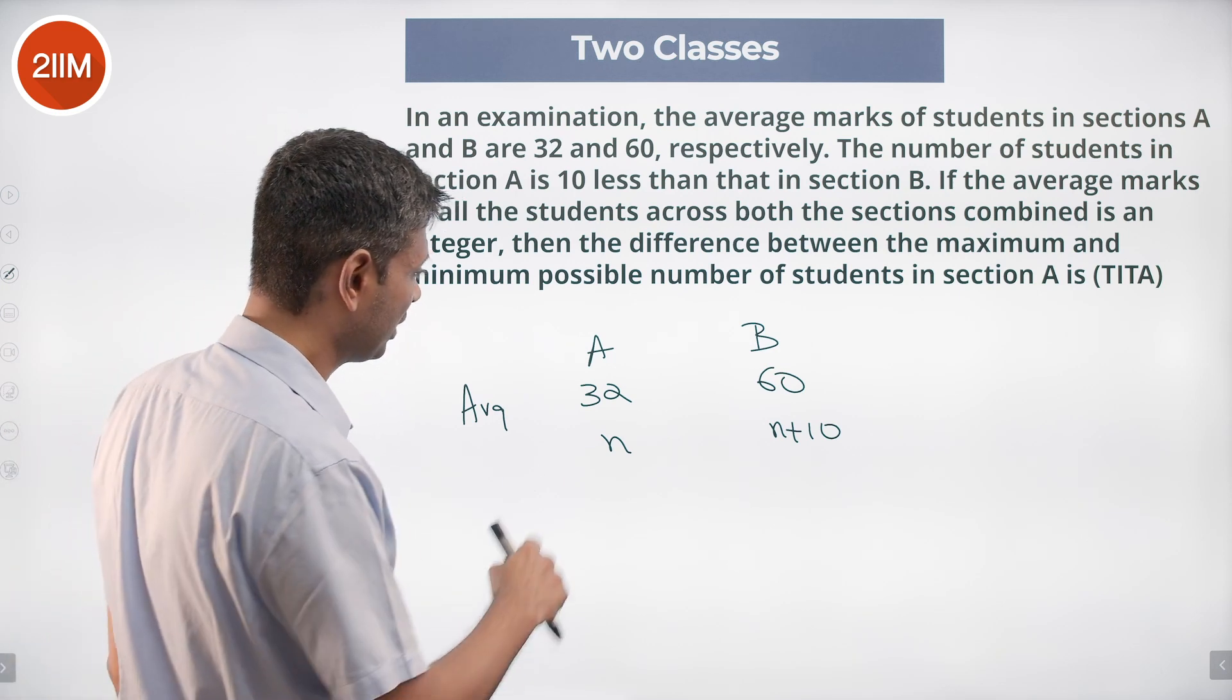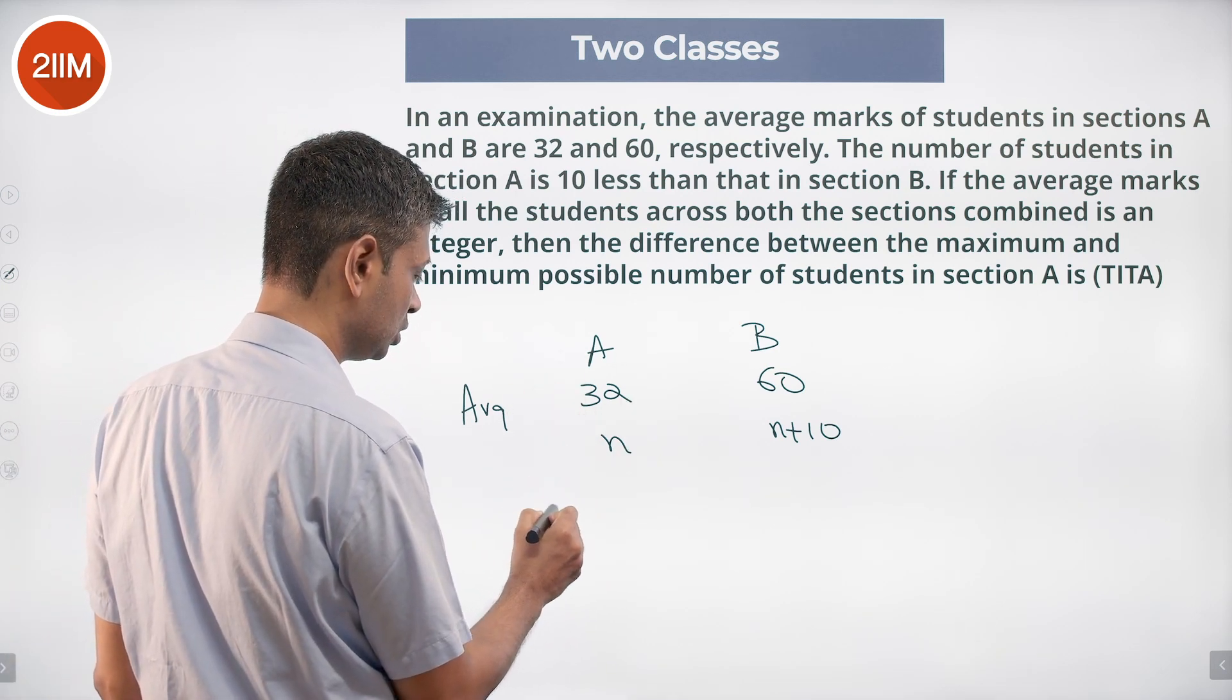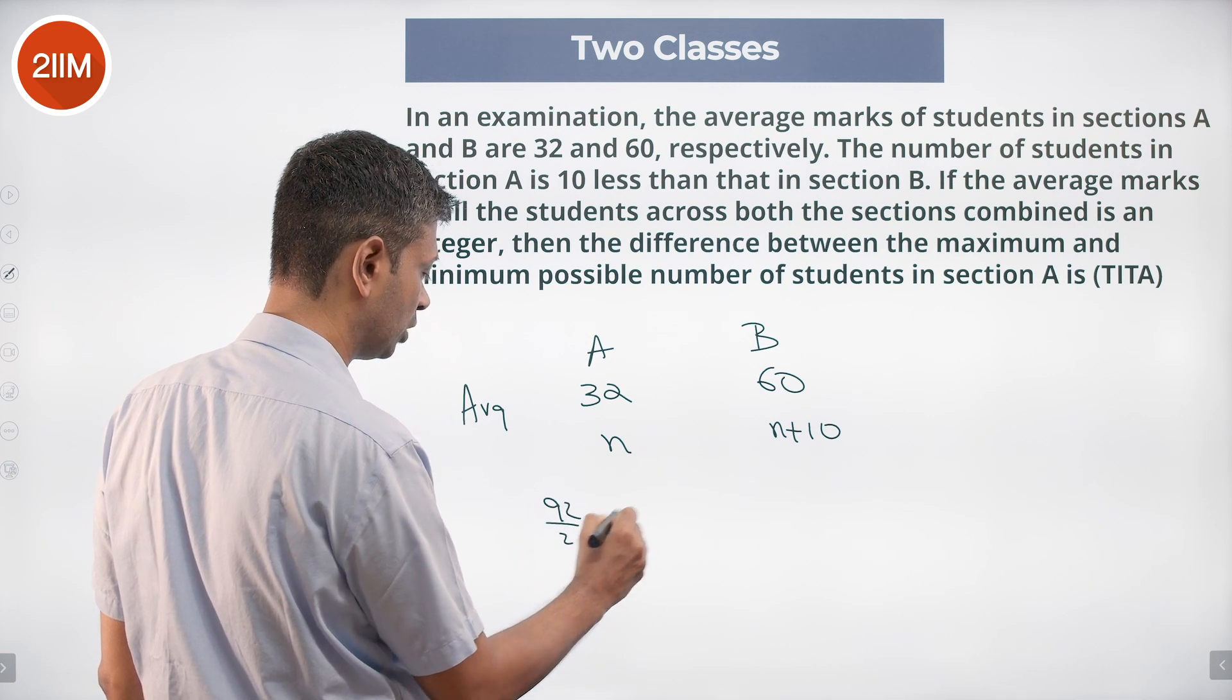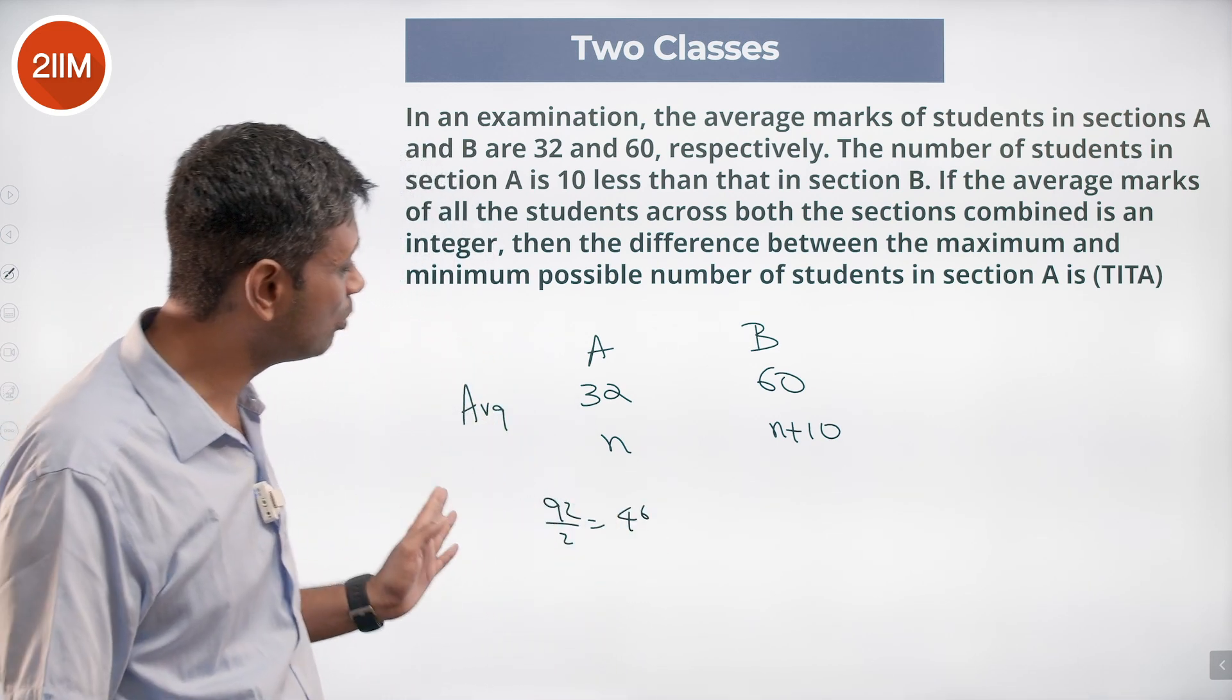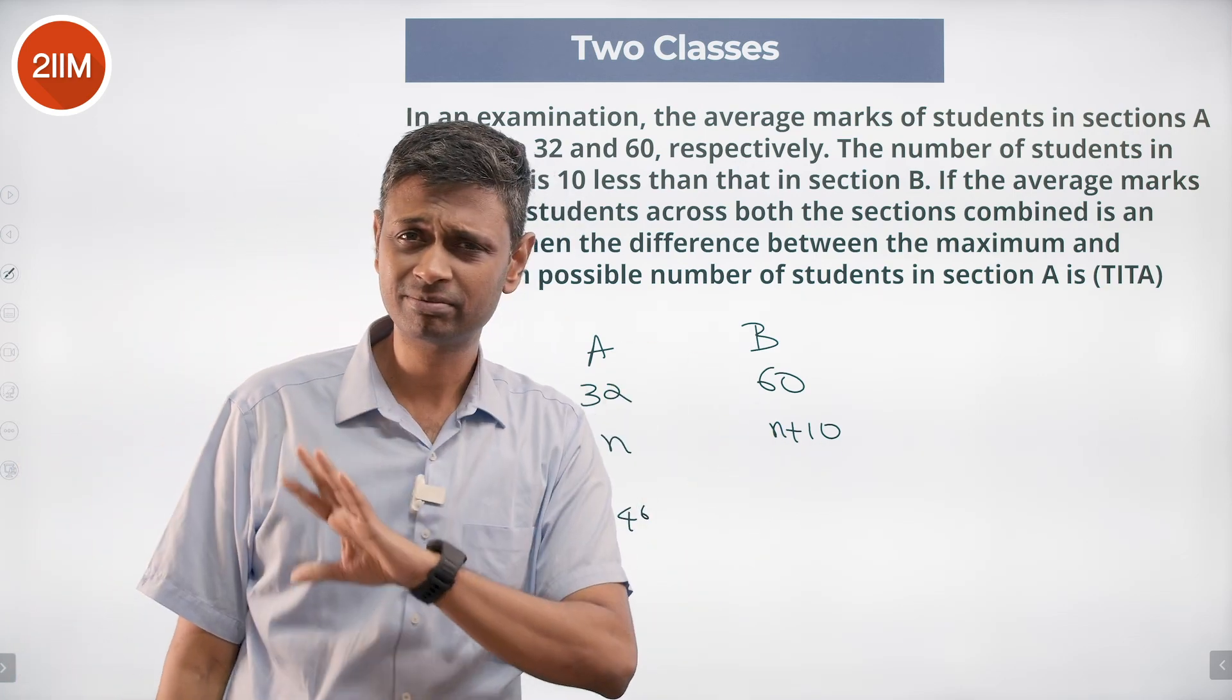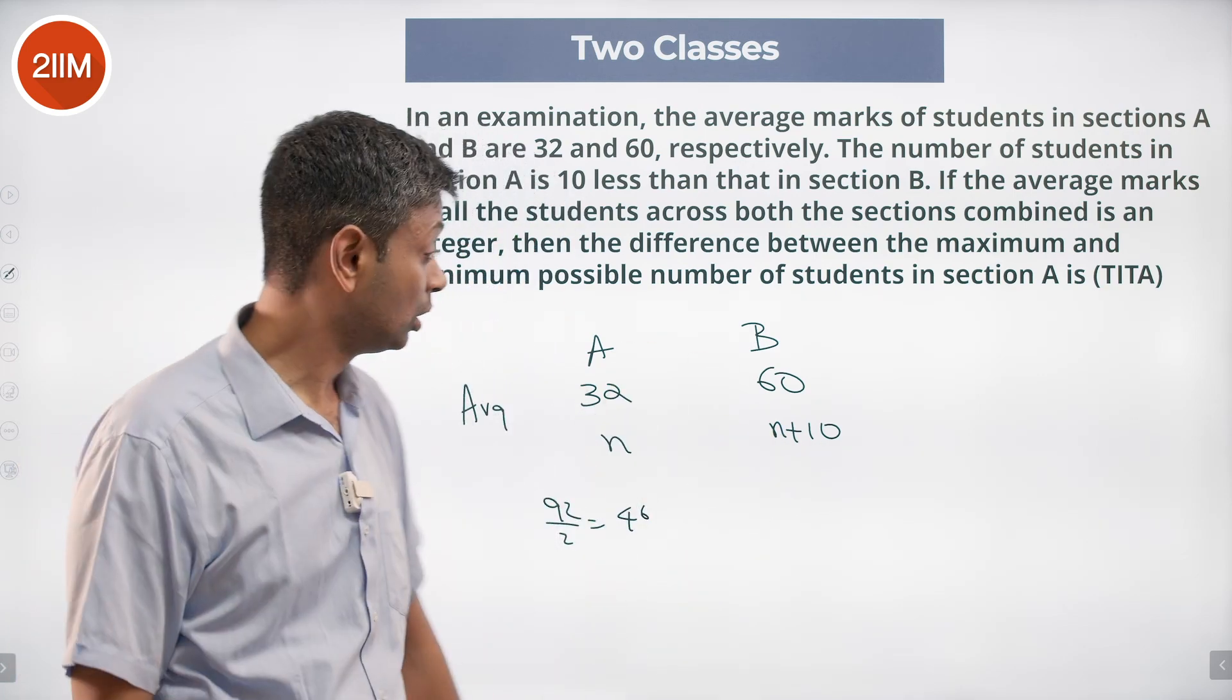To start with 32 and 60, smack in between these two, 92 by 2 equals 46. So the average is more than 46. Why? This weightage is higher. Nice and simple nothing more than that.